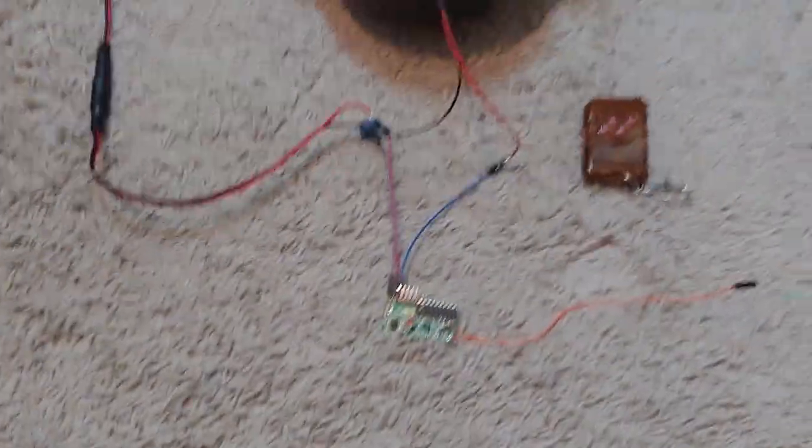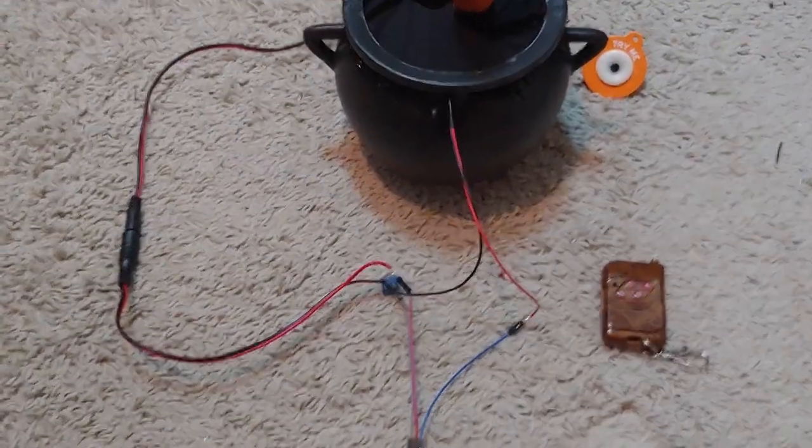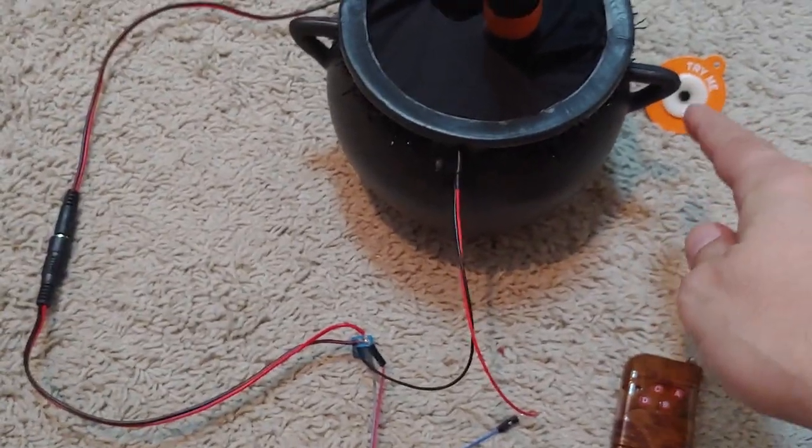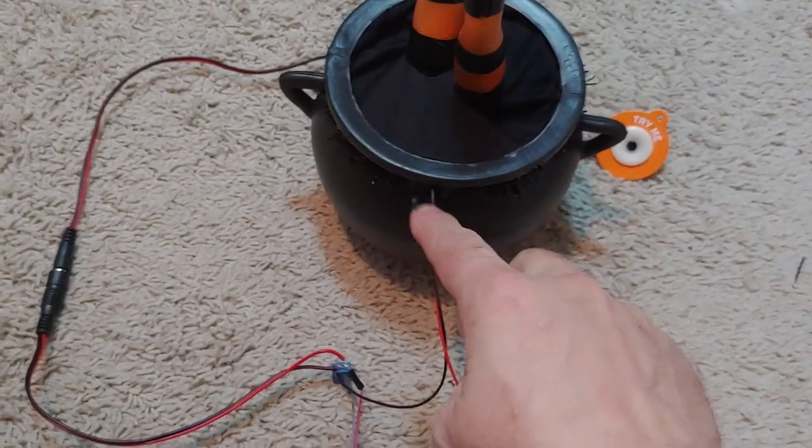Hey this is Mike down in the little project area. I'm going to show an example of an easy way to trigger store-bought props that are usually the try-me button type and have a little light sensor on the front of them.